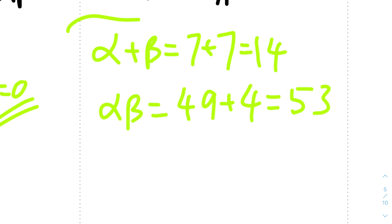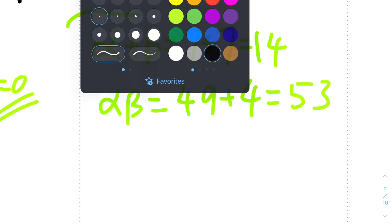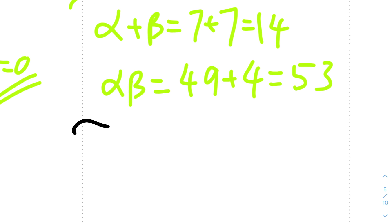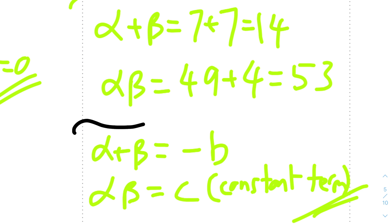For the interpretation: α + β equals the negative of the coefficient b (i.e., −p), and αβ equals the constant term c. That's the final answer.